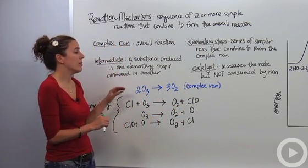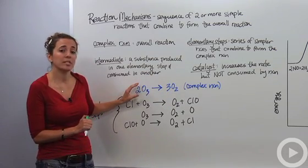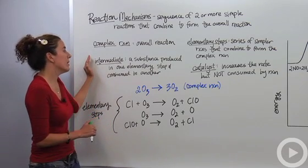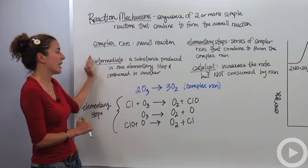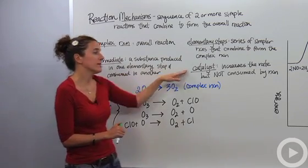And the elementary steps are the series of simpler reactions that combine to form that overall complex reaction. And there are some things that the reaction might be involved in that reaction mechanism but are not shown in this overall complex reaction. One of them is going to be the intermediates. And intermediates are substances produced in one elementary reaction or step and then consumed in another.